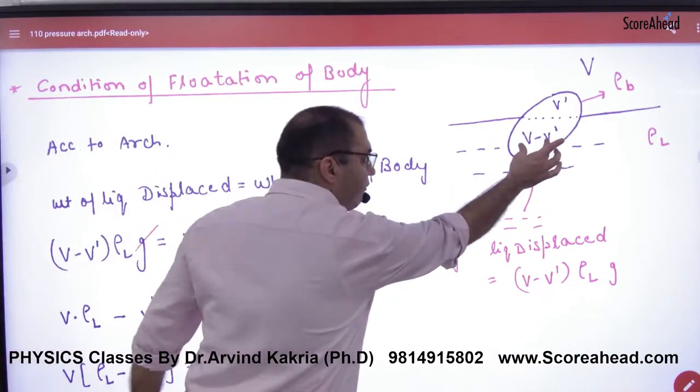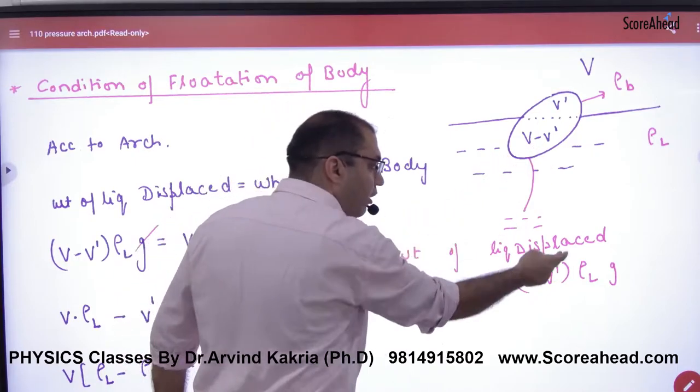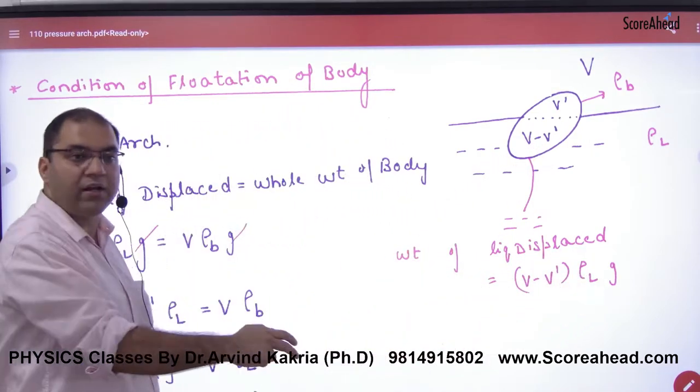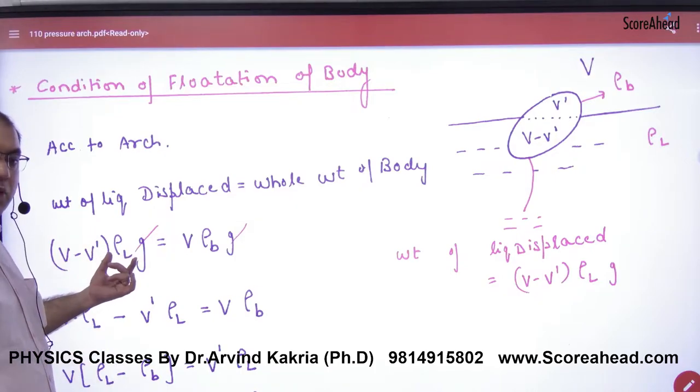We asked that weight of liquid displaced is equal to whole weight of body. So what would be the weight of liquid displaced here? V minus V' is volume of liquid displaced into density of liquid into G. Because what weight is getting out of the liquid? So what's the density of the liquid? So this is weight of liquid displaced and what's the whole weight of the body?